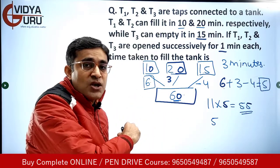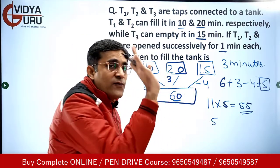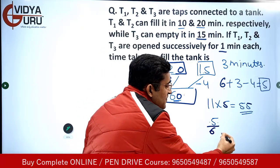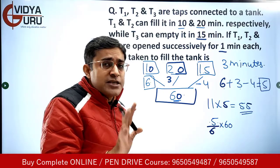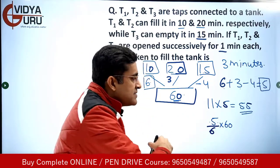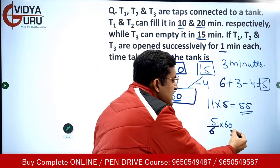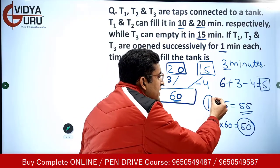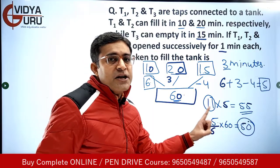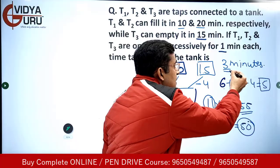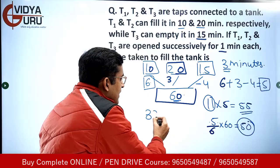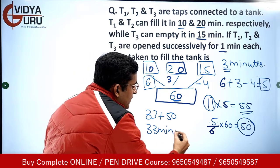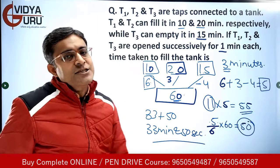T1 does 6 units in one minute, so the time T1 will take for the remaining 5 units is 5 by 6 minutes. In terms of seconds: 5 by 6 × 60 = 50 seconds. Now, the 11 cycles — each cycle has T1, T2 and T3 each running for 1 minute, so one cycle is 3 minutes. Therefore 11 cycles is 33 minutes. Adding the 50 seconds, the total time taken is 33 minutes and 50 seconds.